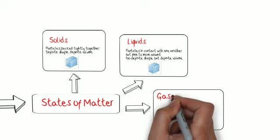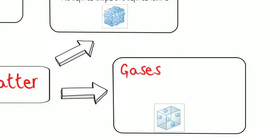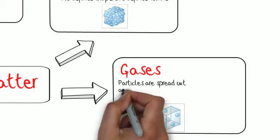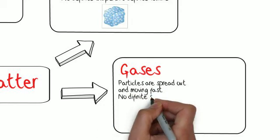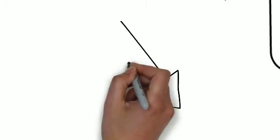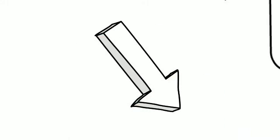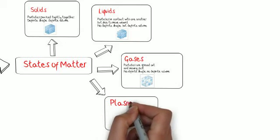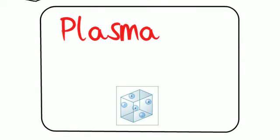The third state of matter are gases. And gases have particles that are spread out and moving around at a very fast rate. There is no definite shape and there is no definite volume. They take the shape of the container and they are compressible. So, gases are different than the others in that there is no definite volume.